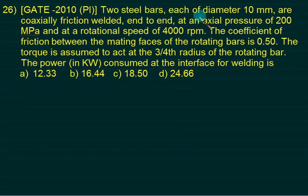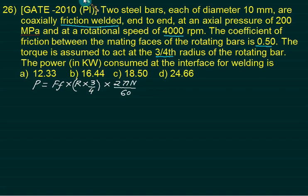Two steel bars, each of diameter 10 mm, are coaxially friction welded end to end at an axial pressure of 200 mega pascals and a rotational speed of 4000 RPM. Coefficient of friction between the mating part is 0.5, mu is 0.5. The torque is assumed to act at three-fourth of radius. We want to find out power at the interface for welding. Is this power required? It's basically the frictional power. Frictional power is given by friction force into radius R. So torque multiplied by 2 pi N by 60.